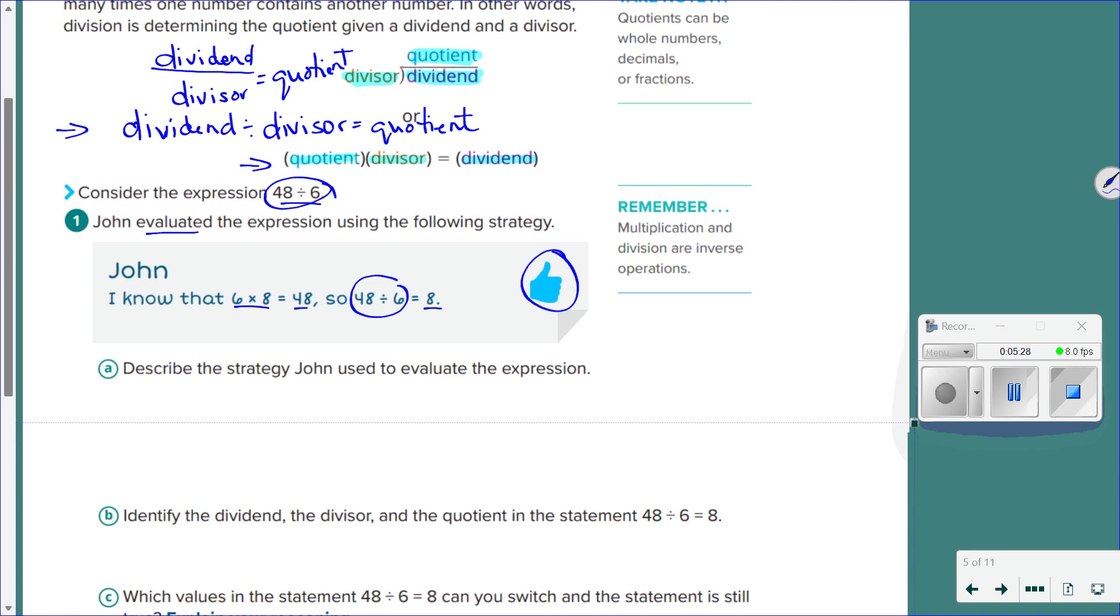One other concept I probably should have highlighted this last class too, but just in case anyone didn't know, multiplication and division are inverse operations. In other words, they kind of undo each other. That's why you had to write it differently. Here it says 6 times 8, right? Here it says 48 divided by 6. So they had to switch it around because they're inverse operations.